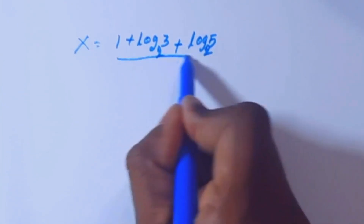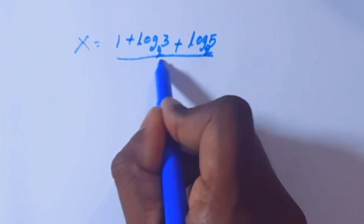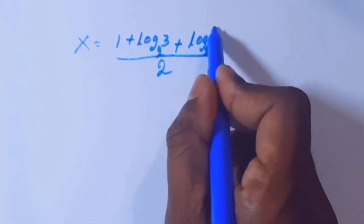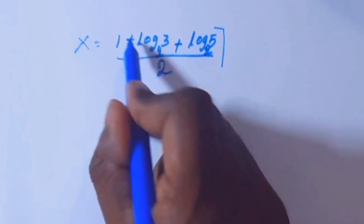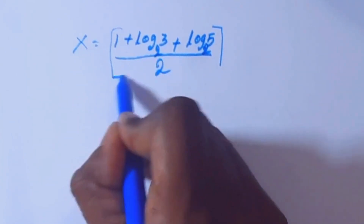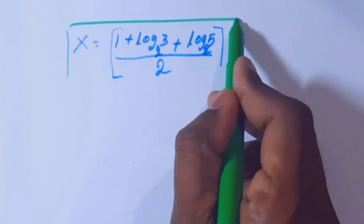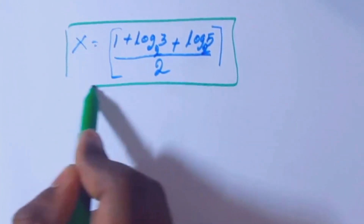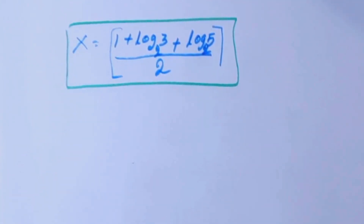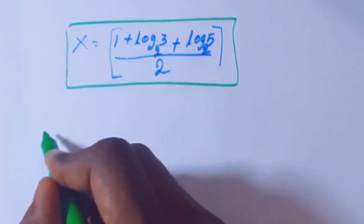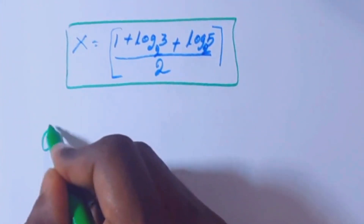So the final answer is x equals (1/2)(1 plus log₂3 plus log₂5). Now we are going to verify this result.